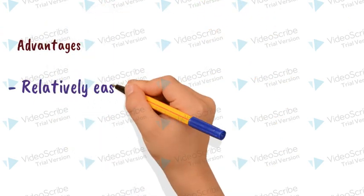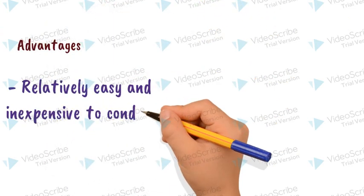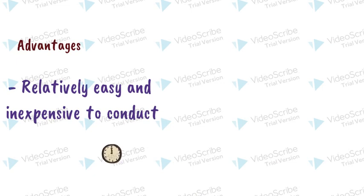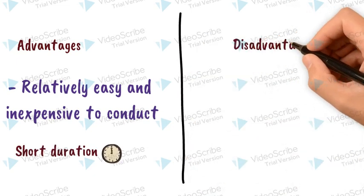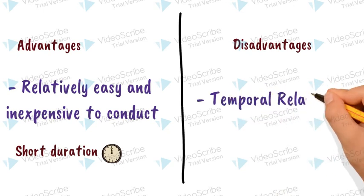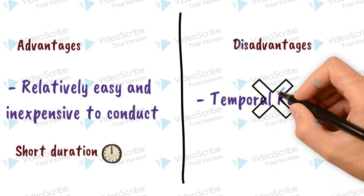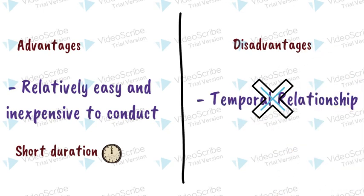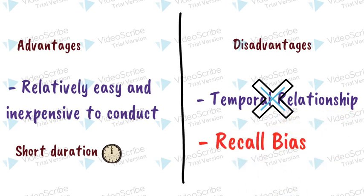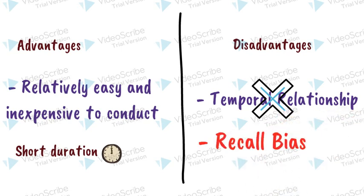Cross-sectional studies are relatively easy and inexpensive to conduct and are useful for investigating exposures that are fixed. However, in cross-sectional studies, the temporal relationship between exposure and onset of a disease cannot be established, and recall bias is a major disadvantage.